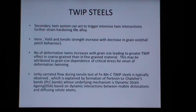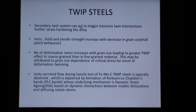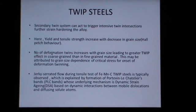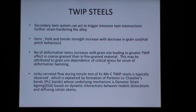A secondary twin system may act to trigger intensive twin intersections for strain hardening the alloy. The yield strength and tensile strength increase with decrease in grain size, which is in accordance with the Hall-Petch behavior. The number of deformation twins increases with grain size, leading to a greater TWIP effect in coarse-grained material than in fine-grained material. This may be attributed to the grain size dependence of the critical stress for onset of deformation twinning.